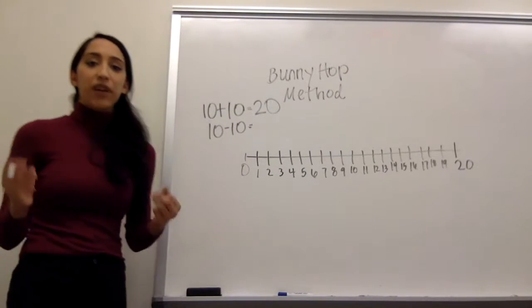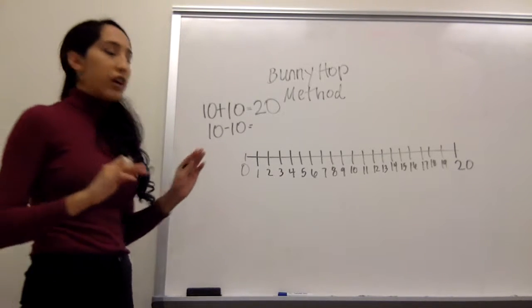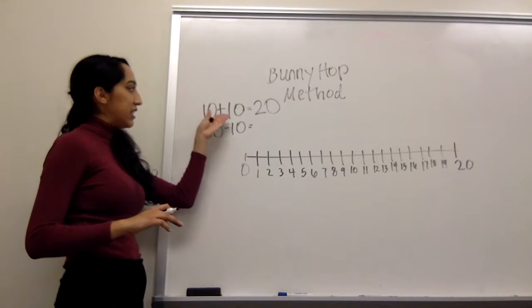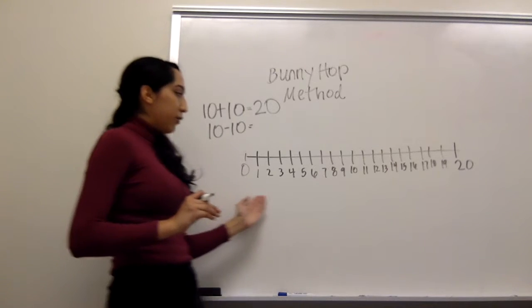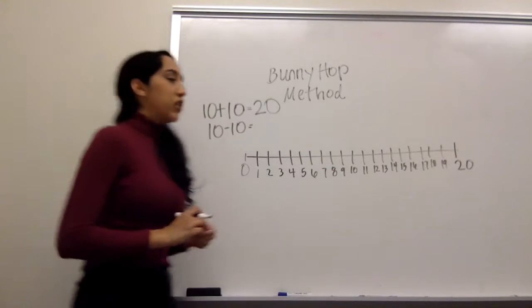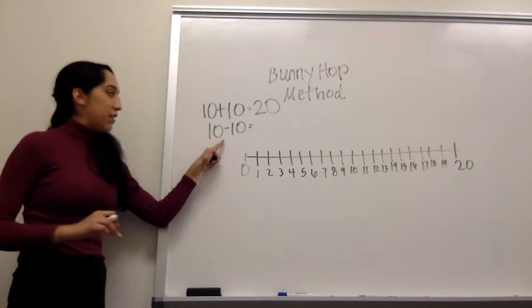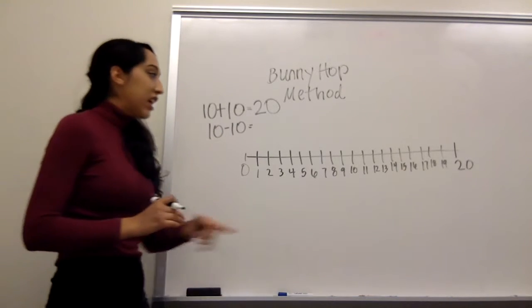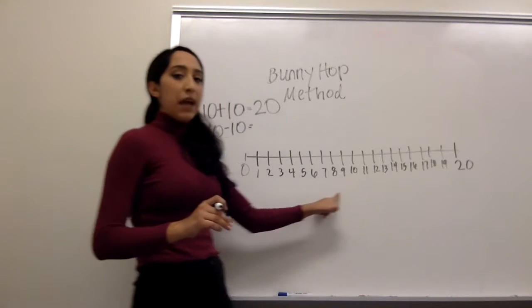Okay, so we already did the bunny method for addition, which was 10 plus 10 equals 20. And when we added, we were going forward. So now we will do the bunny method for 10 minus 10, which is subtraction. And we will be moving from 10 backwards.